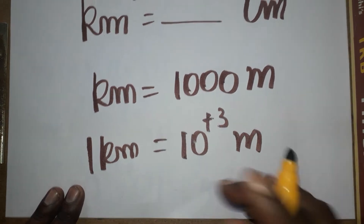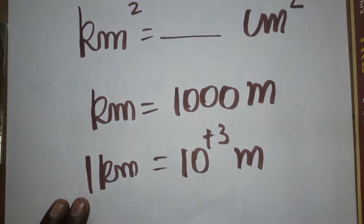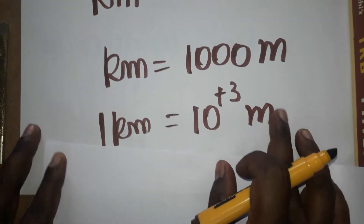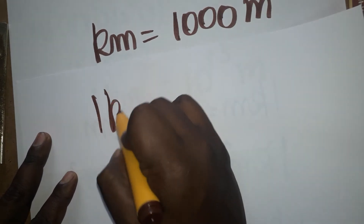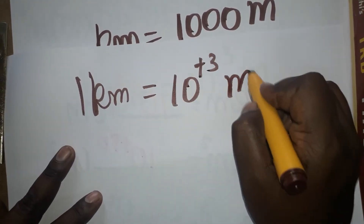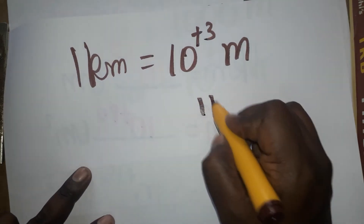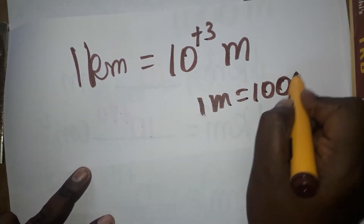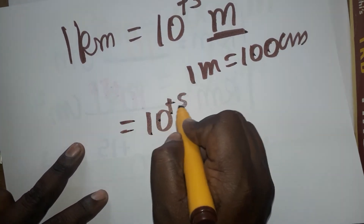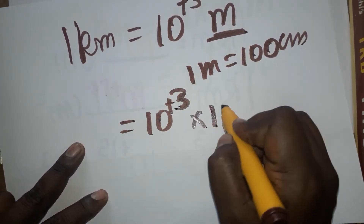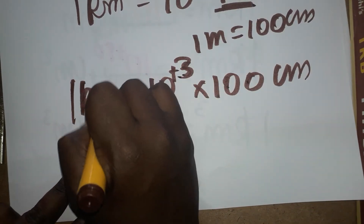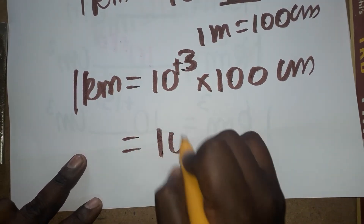Our question is kilometer to centimeter square. 1 meter is 100 centimeter. So 1 kilometer is 10 power plus 3 meters, and 1 meter is 100 centimeter. So instead of writing meters, we write 10 power plus 3 into 100 centimeter.